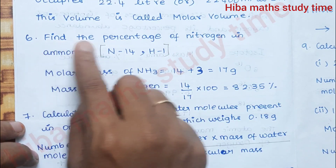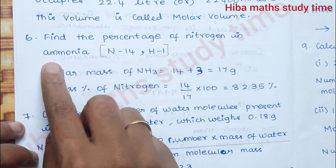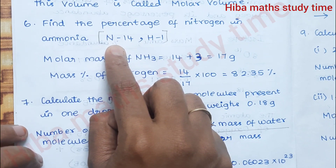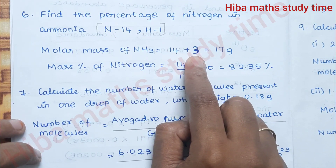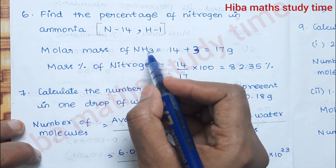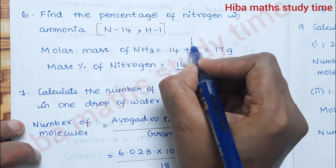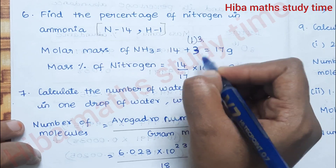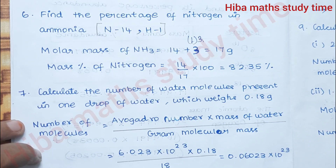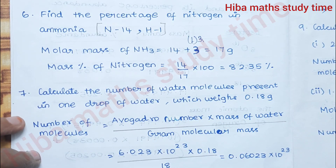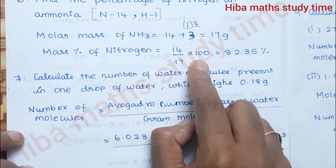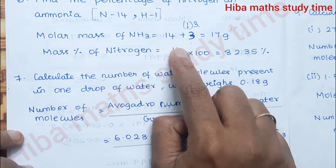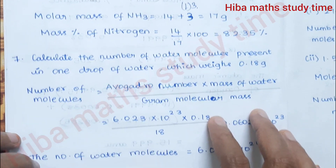Sixth question: Find the percentage of nitrogen in ammonia. Nitrogen = 14, Hydrogen = 1. Molar mass of ammonia = 14 + 3 = 17 grams. Percentage of nitrogen = (14 / 17) × 100.